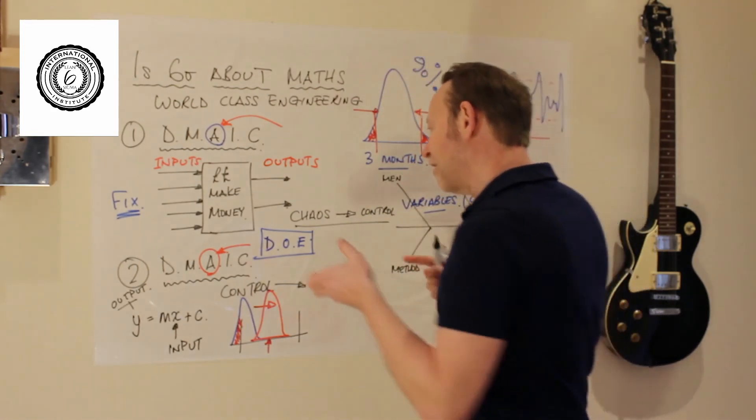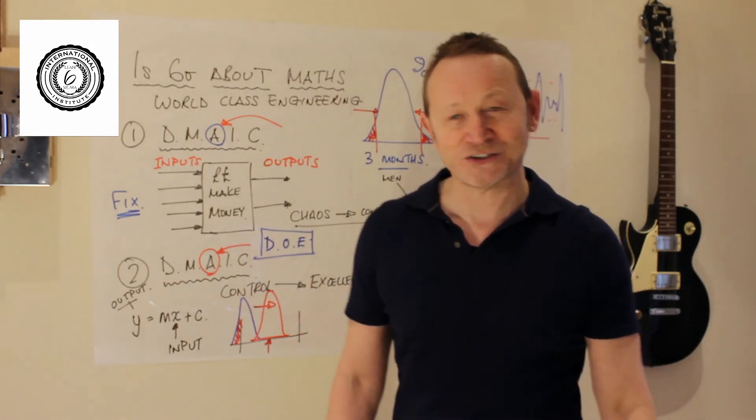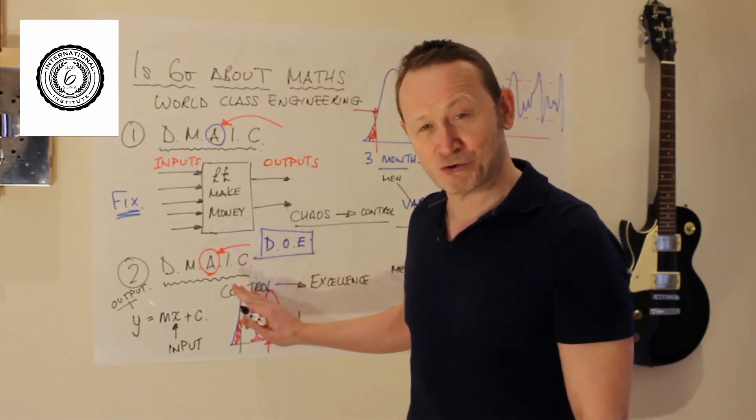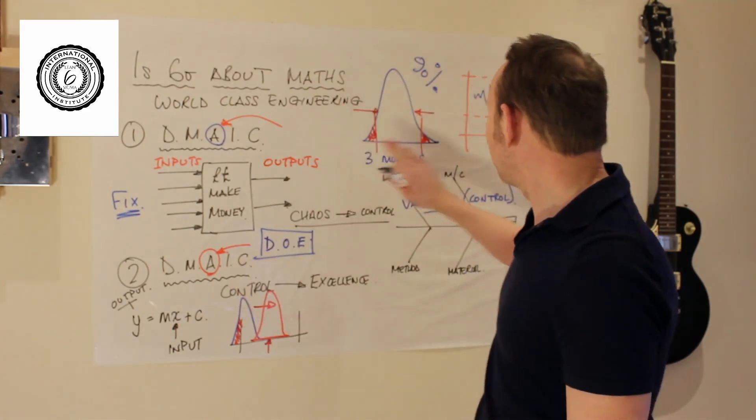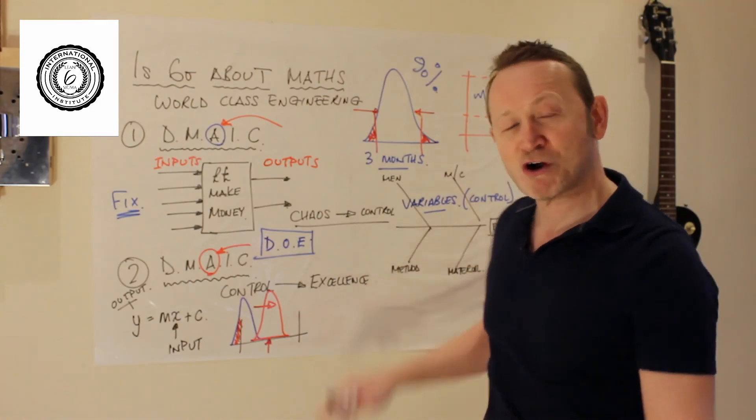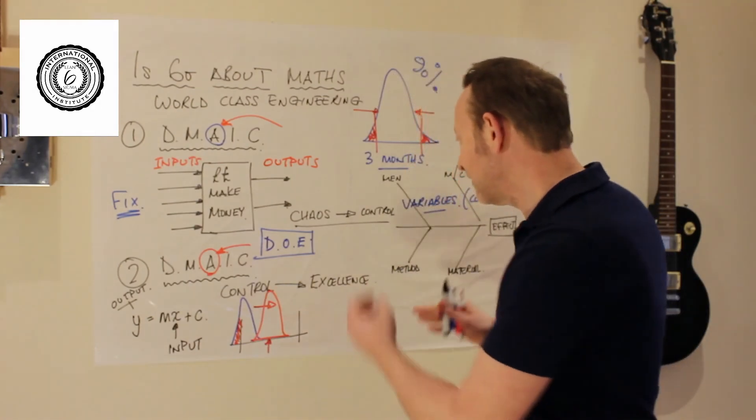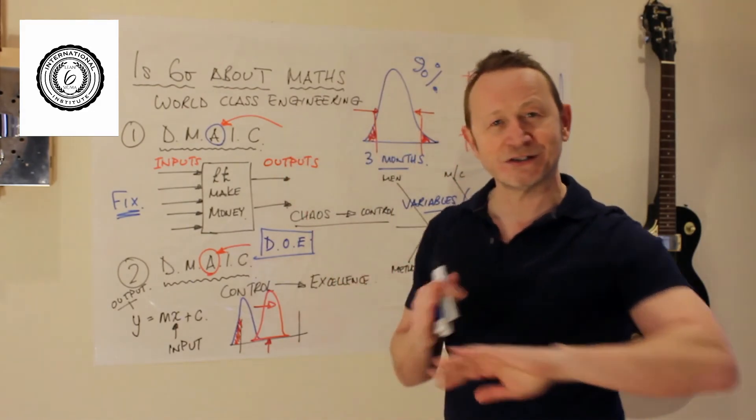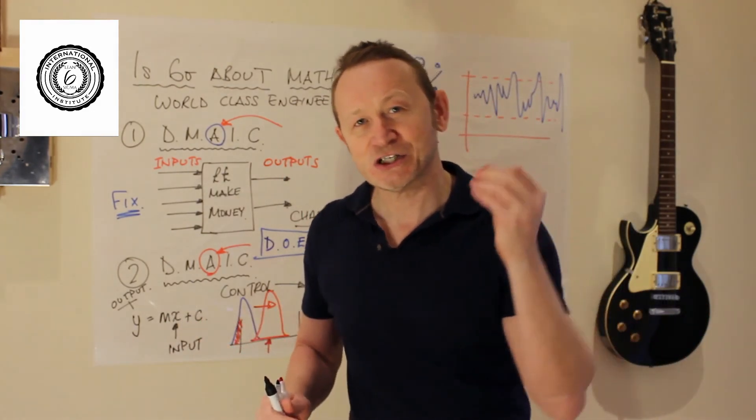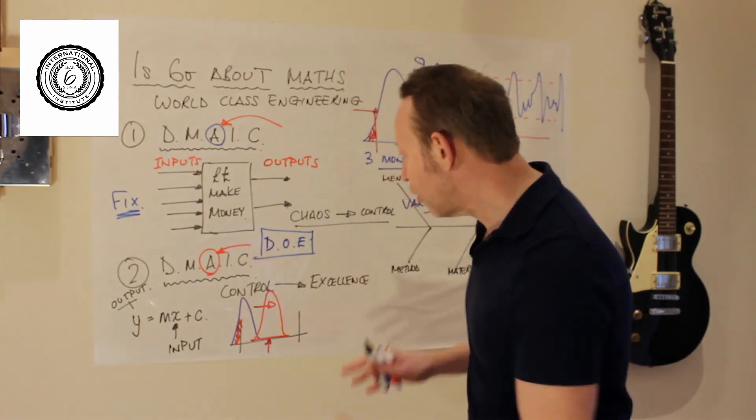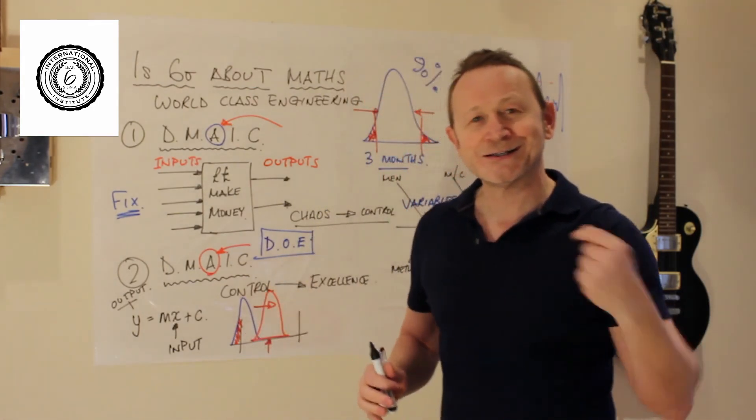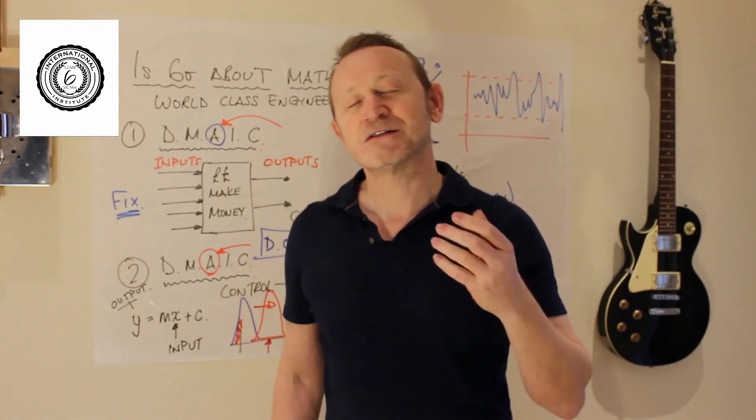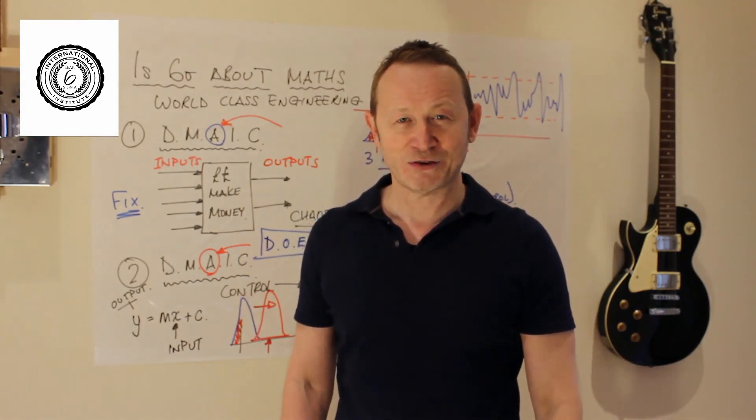So now, I get heavy hitting mathematics out. But this is round two. Often, chaos to control is round one. Control to excellence is round two. Round one needs no mathematics. Just the laws of physics. Round two, control to excellence. Now I'll pull the mathematics out of the toolbox.